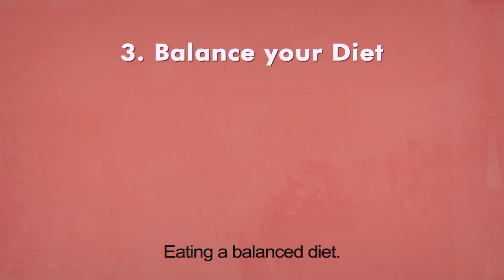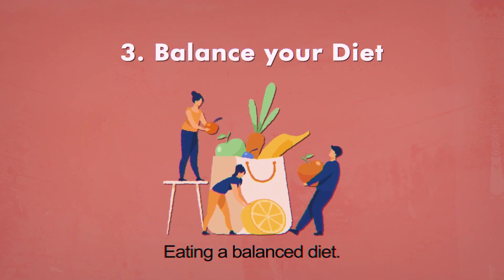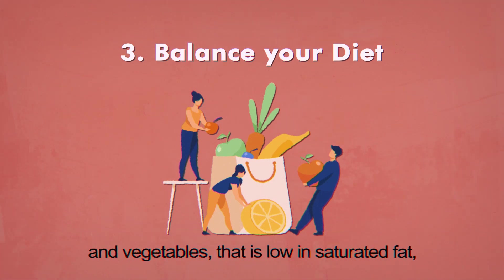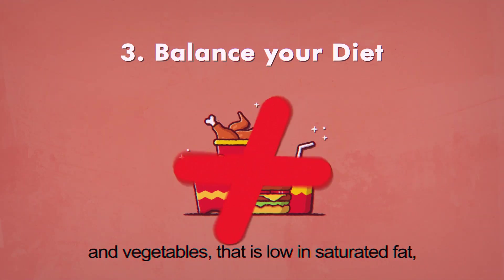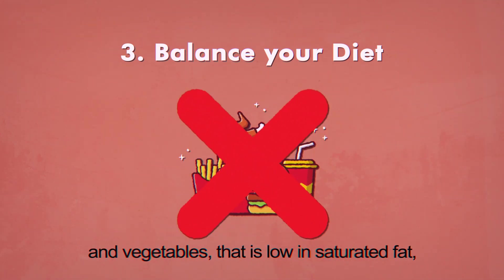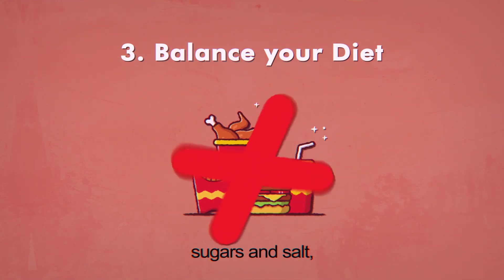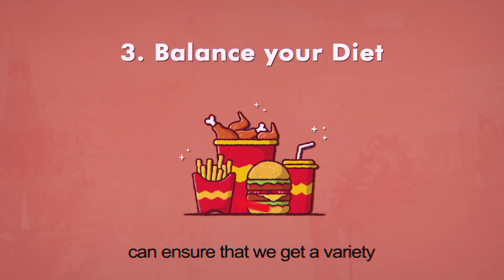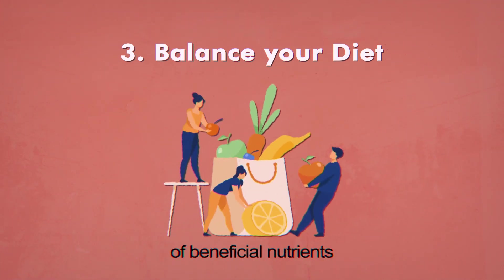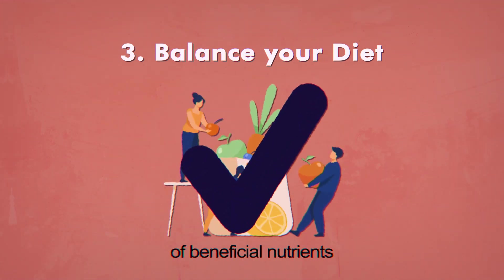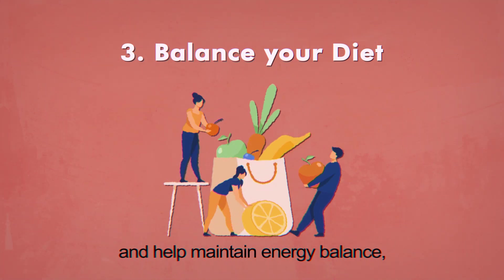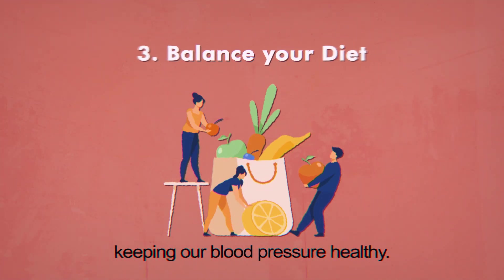Eating a balanced diet. Eating a balanced diet rich in fruits and vegetables that is low in saturated fat, sugars, and salt can ensure that we get a variety of beneficial nutrients and help maintain energy balance, keeping our blood pressure healthy.